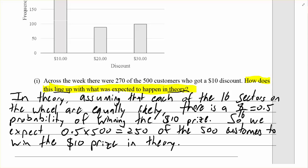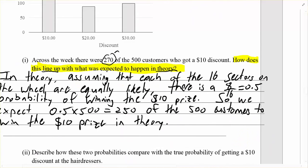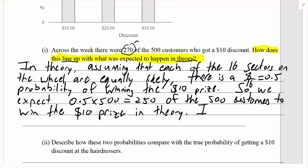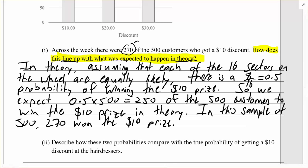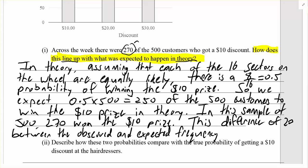What actually happened in the observed results? Well, it tells us that 270 did. You can think of this as a sample — this sample of 500 customers, 270 won $10. Now 270 compared to 250: could that just be down to chance alone and the random variation we expect from one sample to the next? Or is the difference too big to be explained by chance alone? This difference of 20 between the observed and the expected frequency seems small and could be due to chance alone — random variation produced by chance when you conduct an experiment or select a sample.